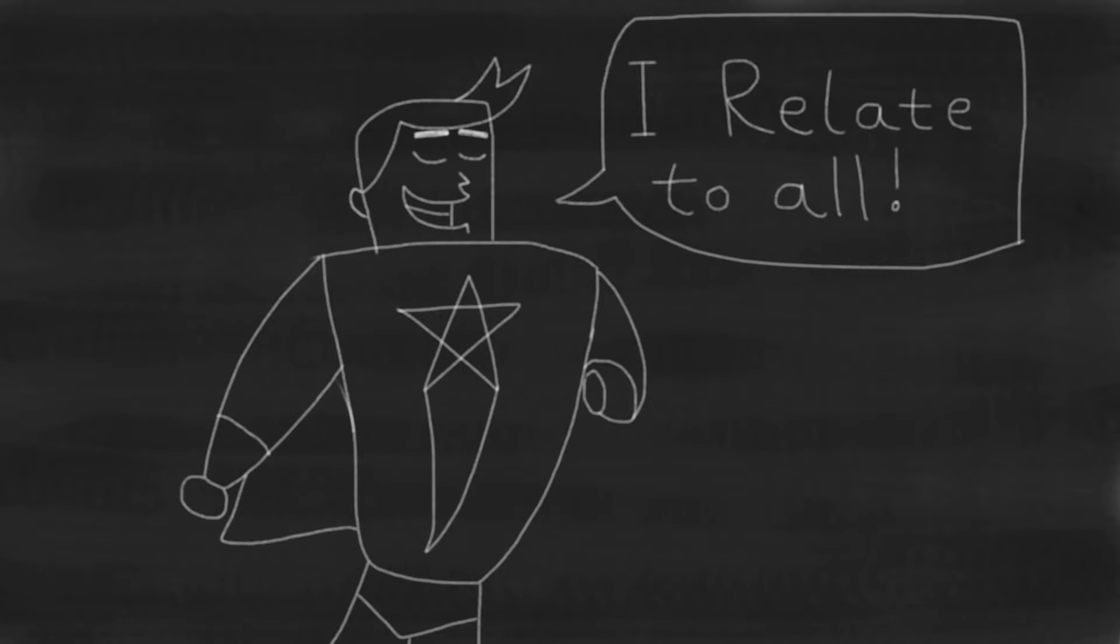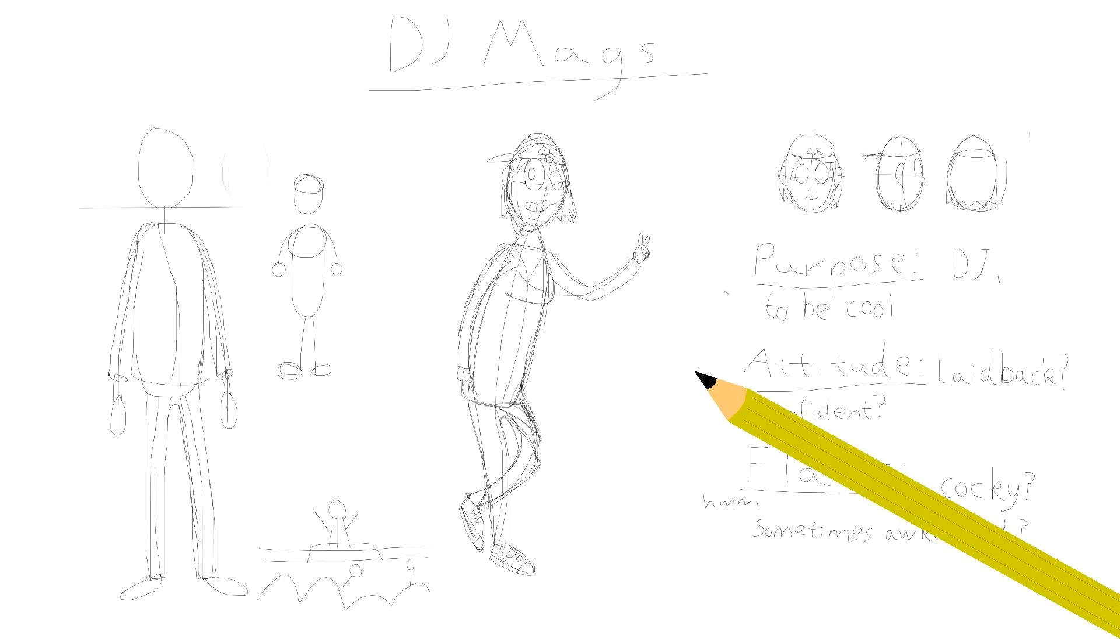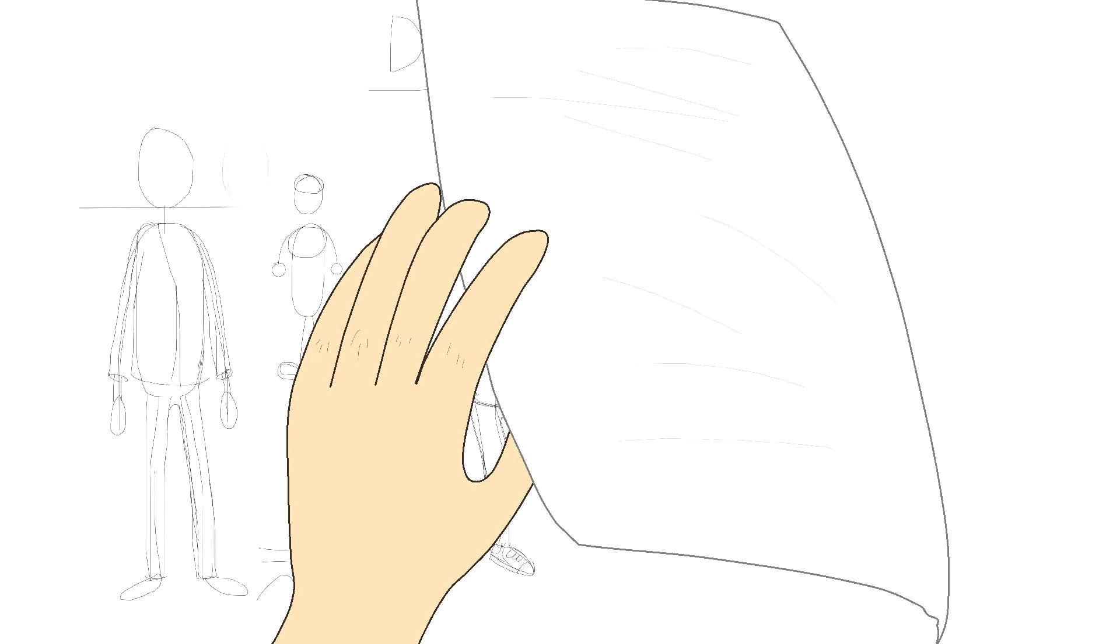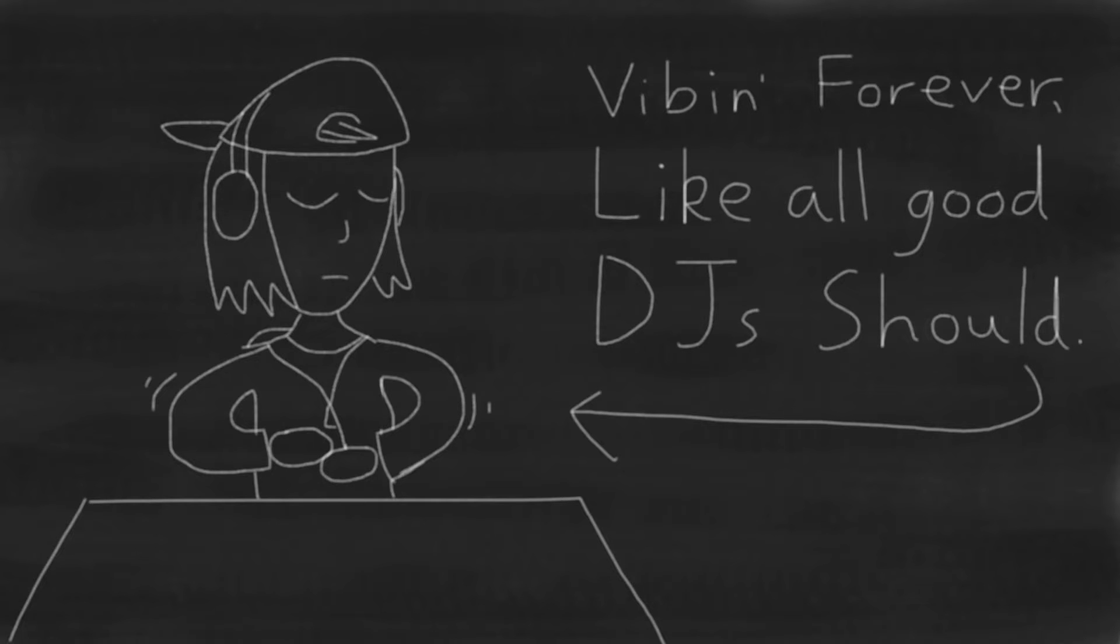While you can make a character whose only purpose is to be relatable, it's not really enough if the character does nothing else. If you draw a new character, the real question you should be asking is, what does it do? Off the bat, you can see that DJ Mags is, of course, a DJ. The trick here is the simpler the wants are, the more realistic your character is.